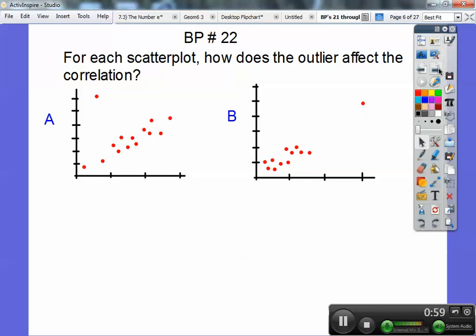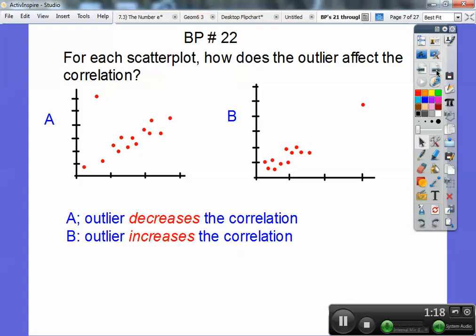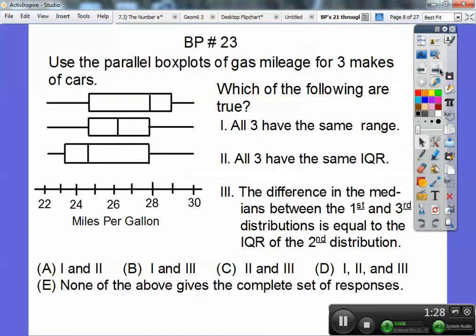For each scatter plot, how does the outlier affect the correlation? This outlier right here, if I included that, it's going to weaken this linear relationship. This one here is going to increase the correlation. So this one decreases your correlation, makes it less strong. This one increases your correlation and makes it more strong.